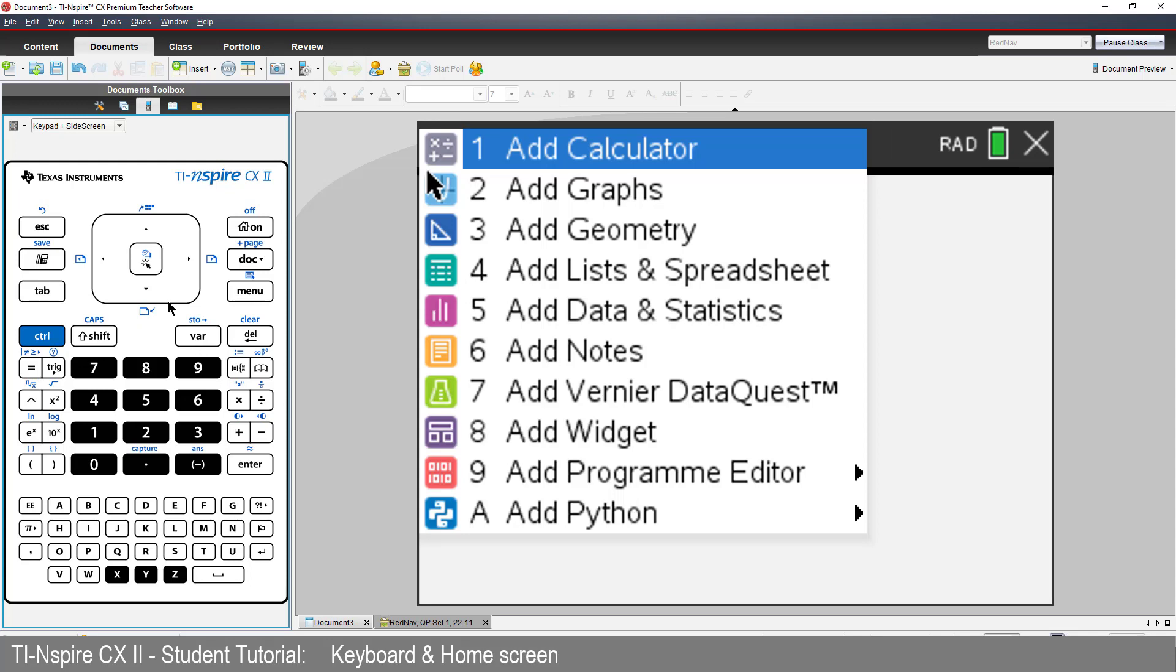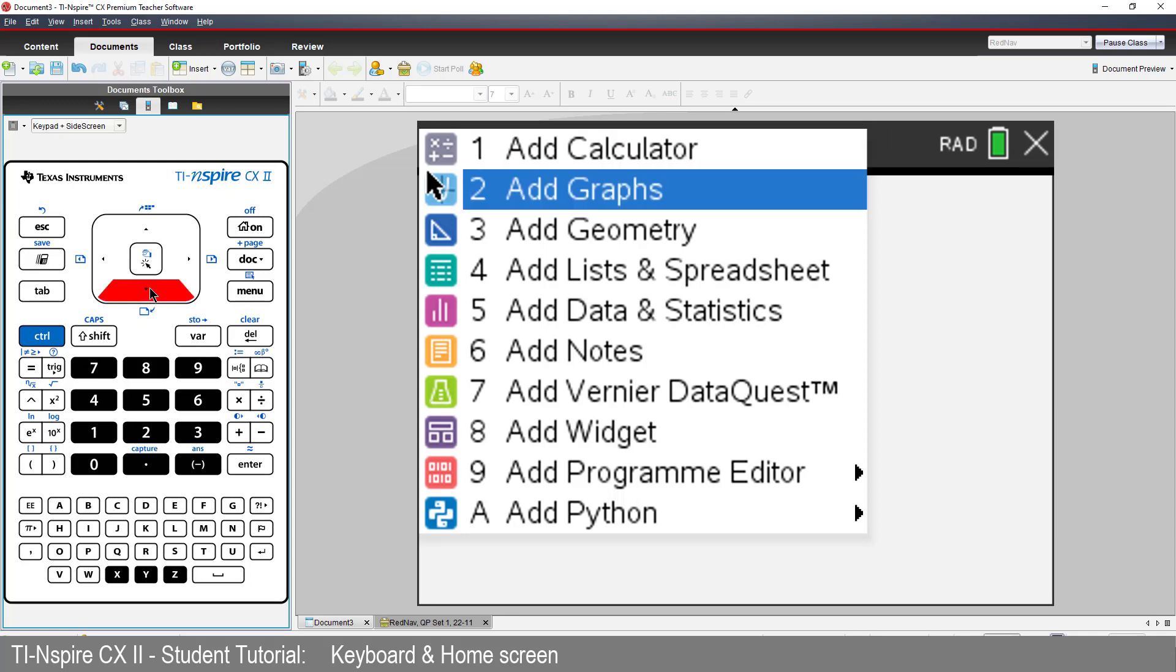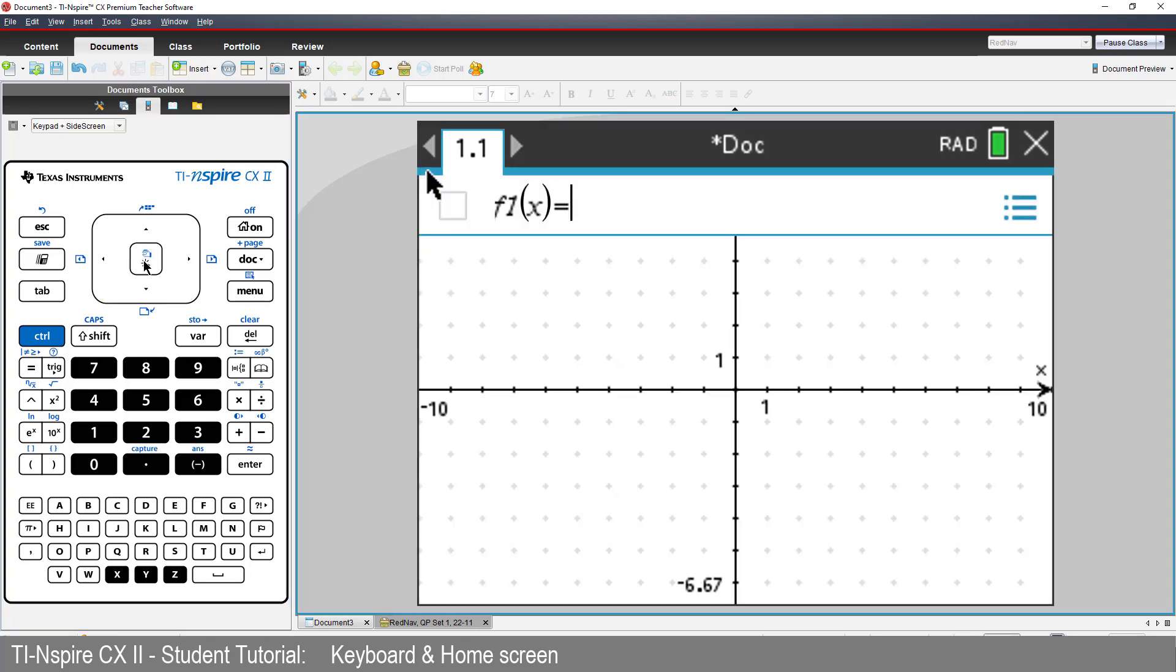I want to draw a graph, so I'll use the down arrow key on the navigation pad and then click to select the Graphs application. The graph entry line is displayed automatically. I'll graph Y equals X squared.